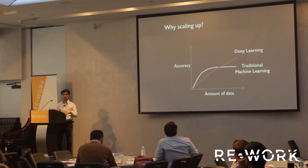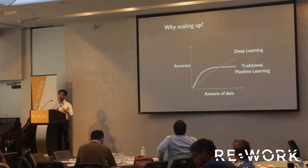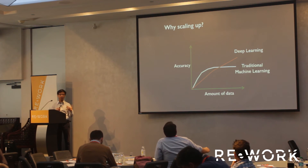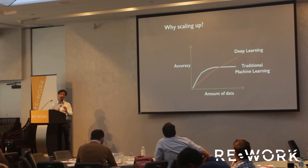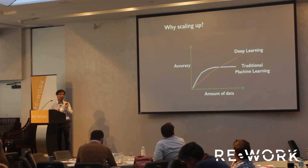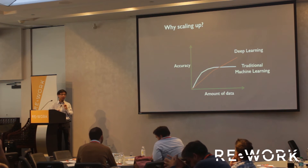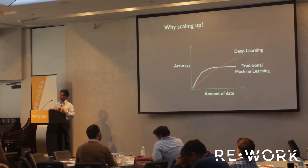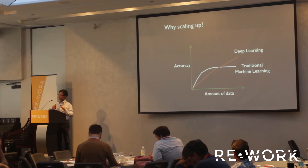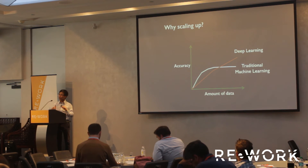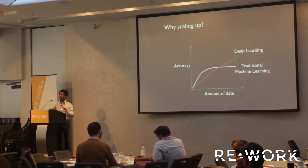Unlike many other machine learning algorithms, what we find in deep learning is different from traditional machine learning. In traditional machine learning, as you increase the amount of data, the accuracy of the model plateaus. But with deep learning, at the beginning when you don't have a lot of data, deep learning doesn't work very well. But as you increase the amount of training data, deep learning gets better and better — to the point that it's substantially better than any traditional machine learning. And that's very suitable for Google because we have a lot of data.